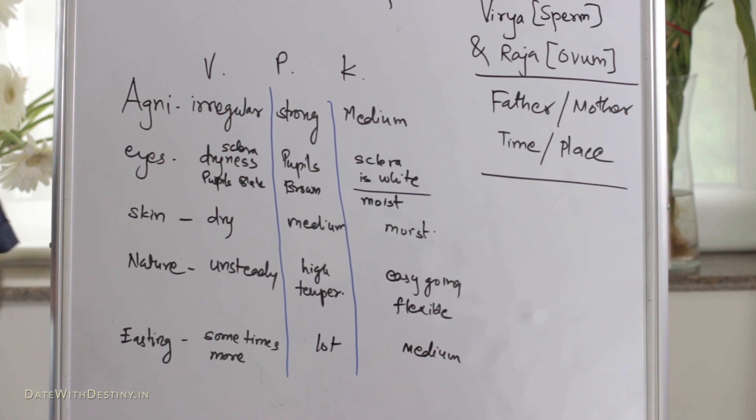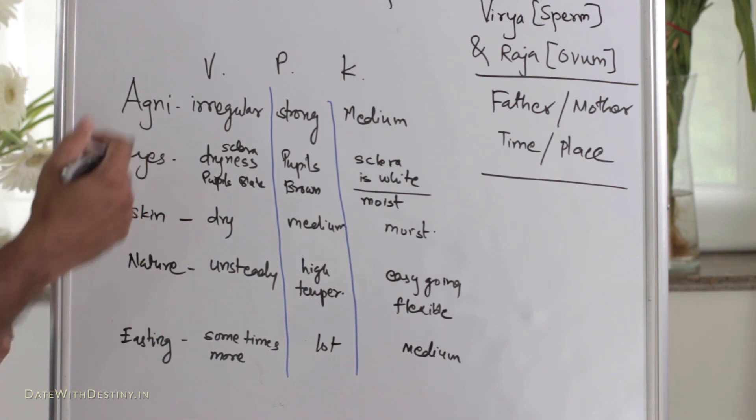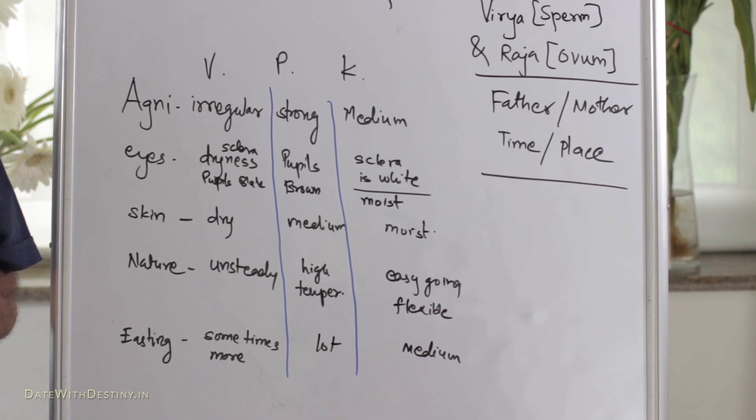Then, the next is eyes. You can see your eyes or others. The pupil is very dark black in Vata Prakruti, and the sclera is very dry. While in Pitta Prakruti, the pupil is brownish, and the sclera is somewhat reddish. And in Kapha Prakruti, the sclera is purely white and clear, and you can also see moist eyes in Kapha Prakruti.